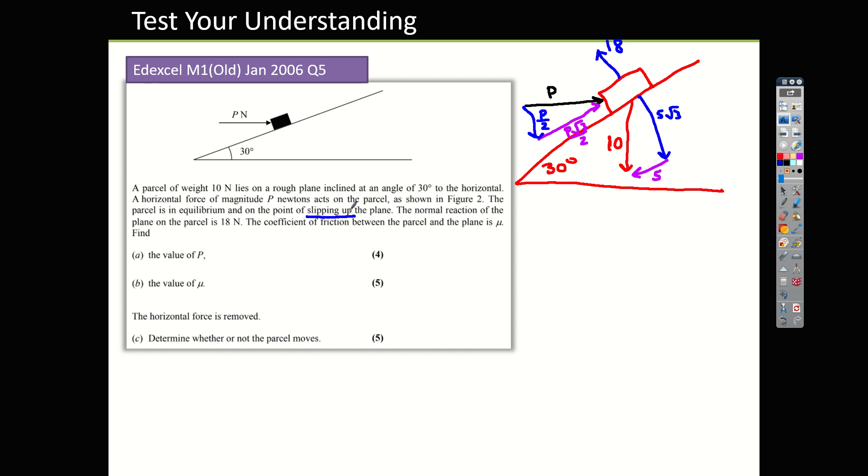And as we said, based on this slipping up the plane, or at least trying to slip up the plane, we've got a frictional force that acts down. And that's going to be μ times R, R being 18. So 18μ. If we look at the colors that I've got, it looks like blue is probably the way to go first, because that's only got P as the unknown. And then once I've got P, I can do an equation in purple and sub in my value of P to get the value of μ. So let's go blue first. P over 2, that's downwards, plus 5 root 3, also downwards, equals 18.